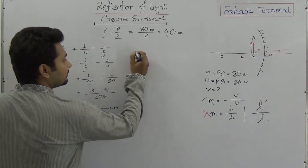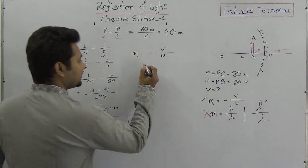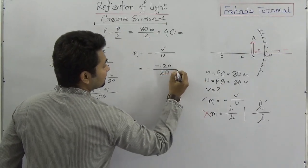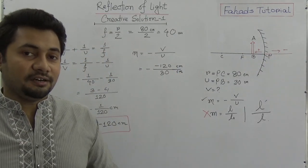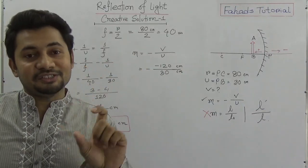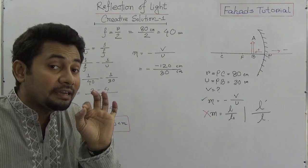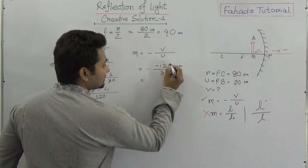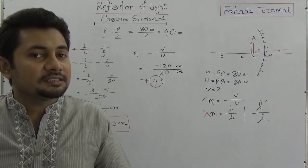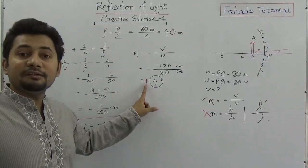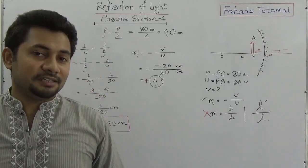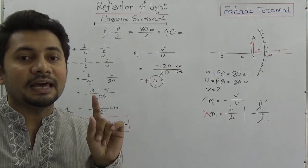Now for M equals minus V over U: V is minus 120 and U is 30. So M equals minus(minus 120)/30, which gives positive 4. A positive value of magnification means the image is virtual and erect. If magnification were negative, the image would be real and inverted. So M equals positive 4 means the image is virtual and erect.